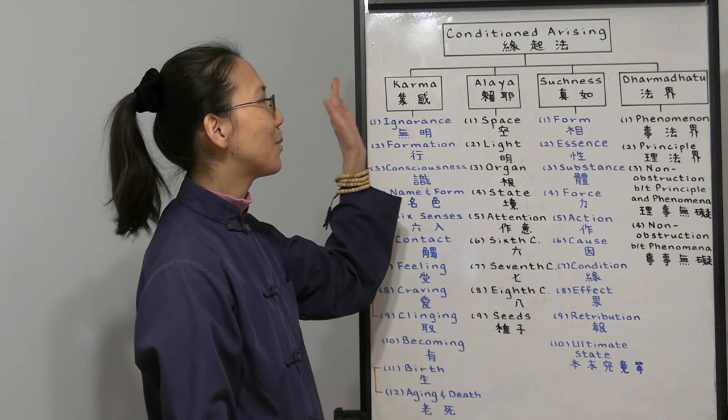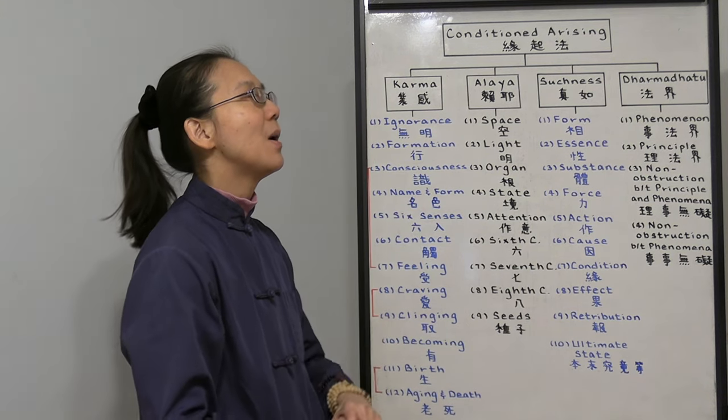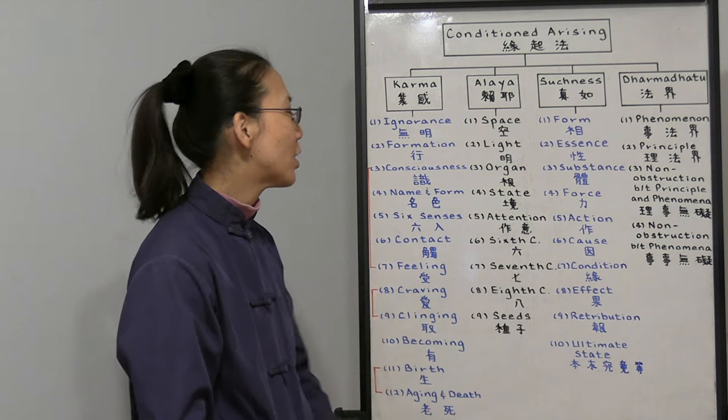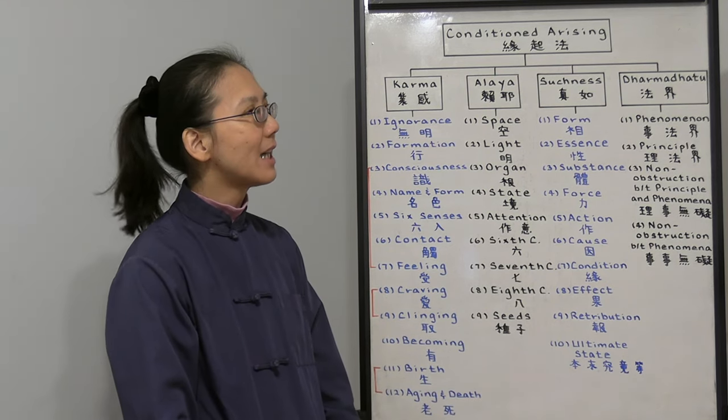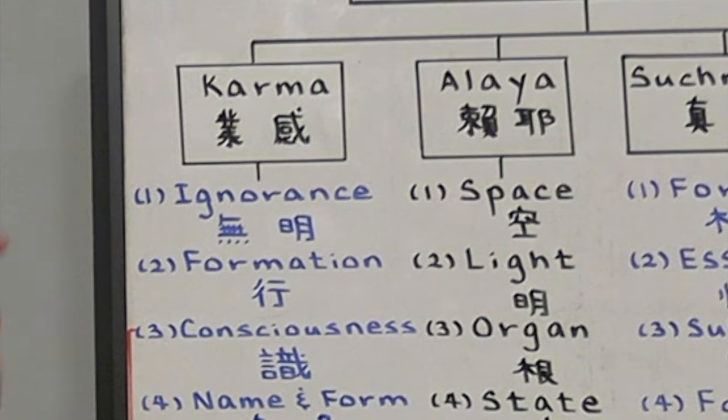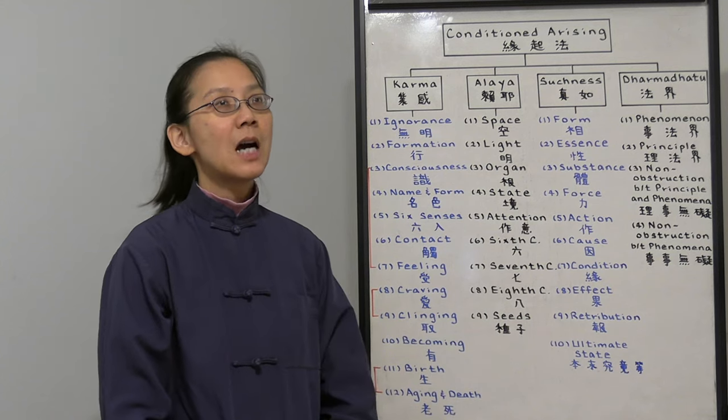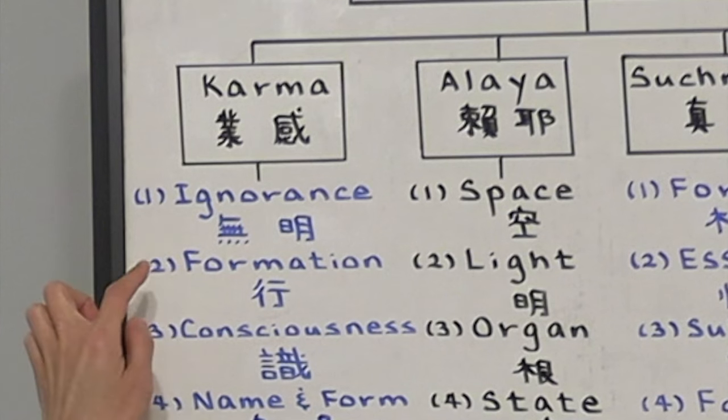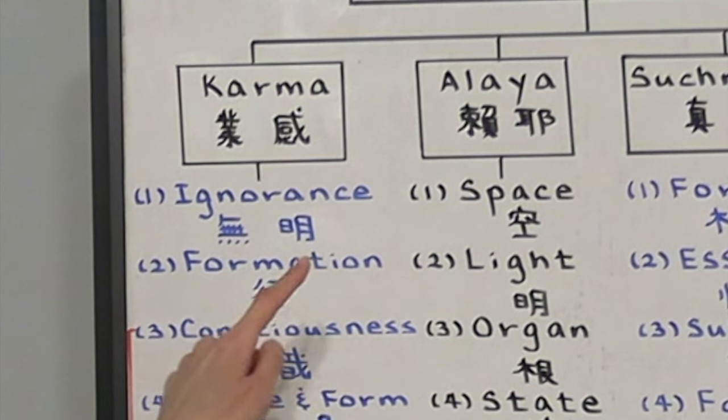So let's first talk about condition arising based on karma, Shravaka Buddhism. We always talk about everything in terms of the 12 links of dependent origination. How does reincarnation come about? First, we are ignorant. We forgot we have the Buddha nature and we have a sense of the self.